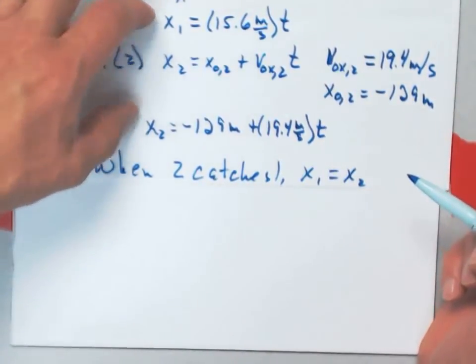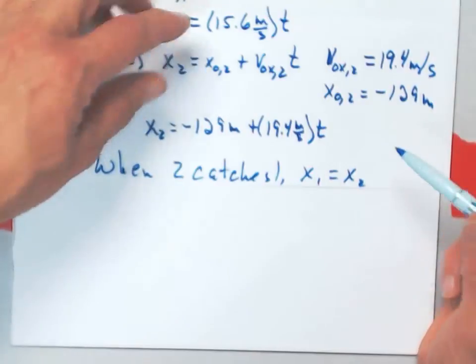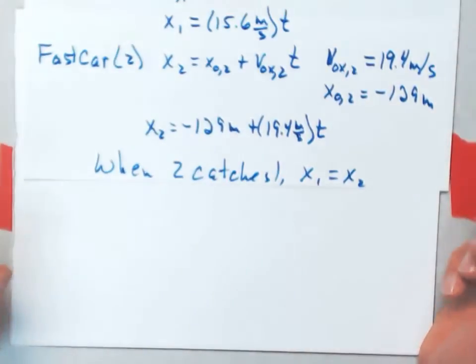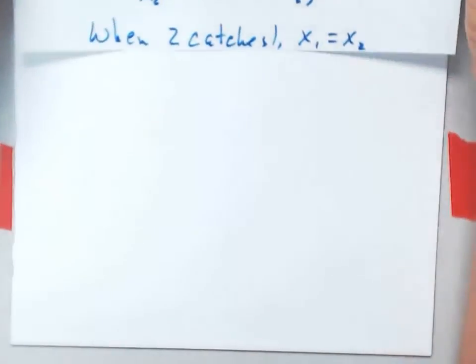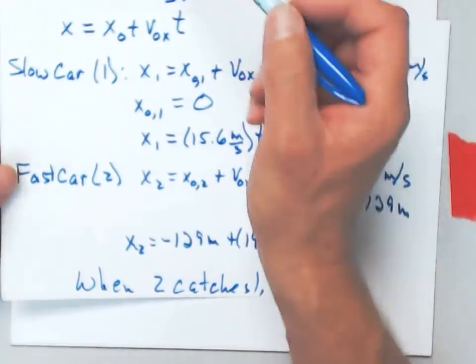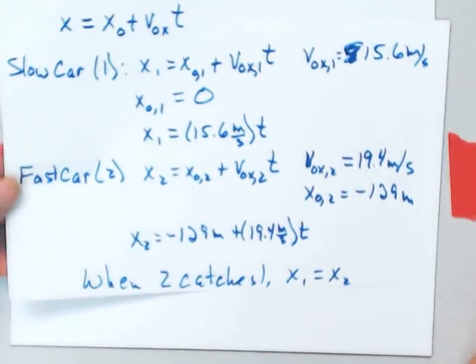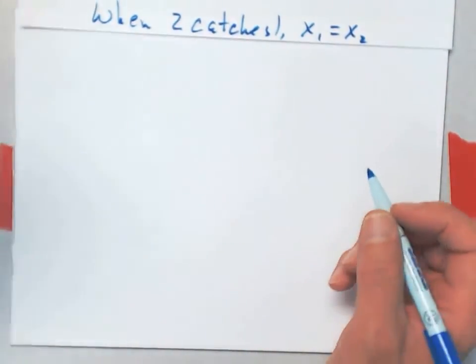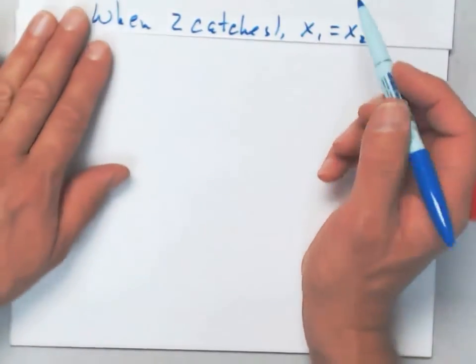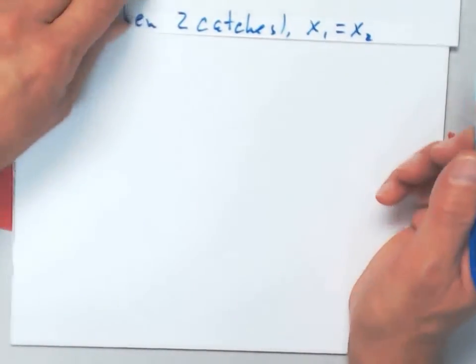So, if I just set x1 equal to x2 and solve for t, that'll tell me when it happens. And that's the first thing I want to figure out is how long will it be before the second car passes the first.